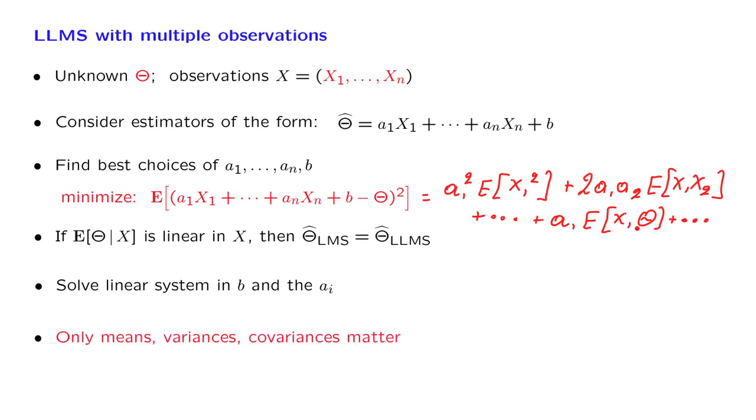So similar to the case where we had a single observation, in order to solve this problem, we do not need to know the complete distribution of the x's and of theta. It is enough to know all the means, variances and covariances of the random variables that are involved. And once more, this makes this approach to estimation a practical one, because we do not need to model in complete detail the distribution of the different random variables.